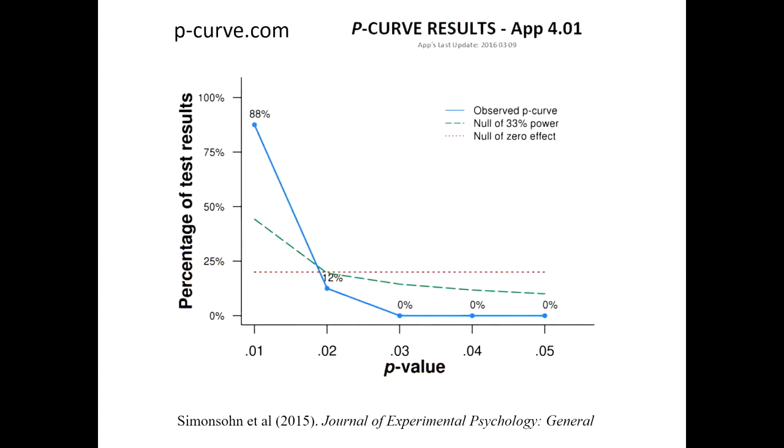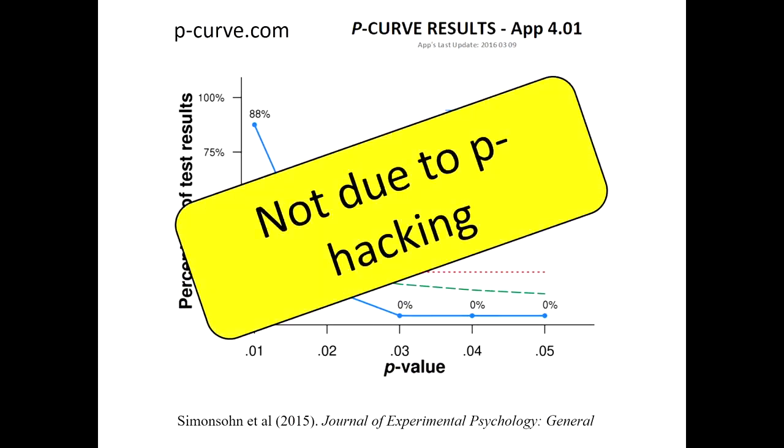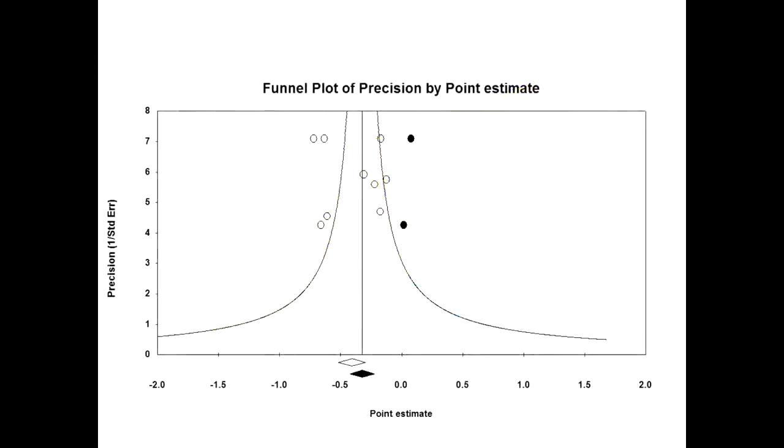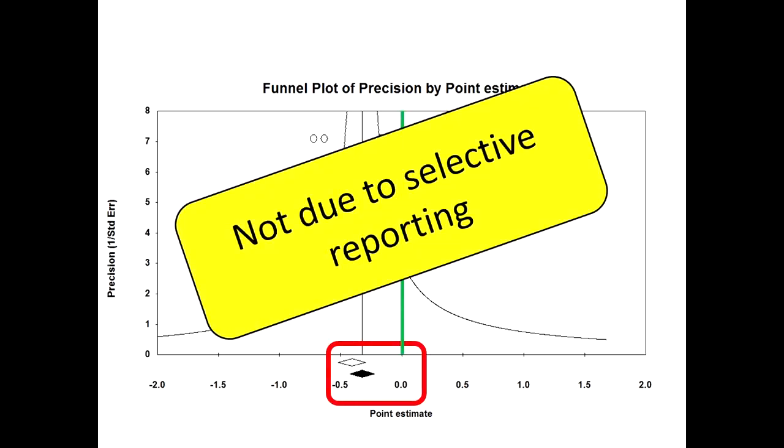You could then also ask questions like, is this due to p-hacking? Well, no, it's not due to p-hacking. Are the results due to selective reporting? No, they're not due to selective reporting. There's lots of nice software now that you can use data that goes into a meta-analysis and start asking these questions about questionable research practices. And, of course, we knew what we were doing. We knew not to do selective reporting, and not to p-hack, and not to do a whole bunch of things. But it was nice to see that the software confirmed that that was the case.